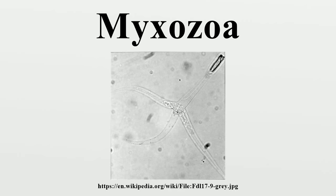Pathology: Infection occurs through valved spores. These contain one or two sporoblast cells and one or more polar capsules that contain filaments which anchor the spore to its host. The sporoblasts are then released as a motile form, called an amoebula, which penetrates the host tissues and develops into one or more multinucleate plasmodia.